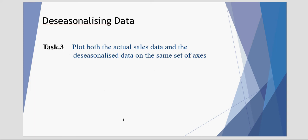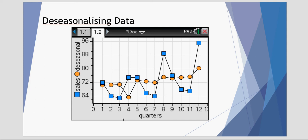Our third task is to plot both the actual sales and the deseasonalized data on the same set of axes. I've used my TI Inspire. This is the data I've got. Our sales here are in the blue squares. A fair bit of variation.